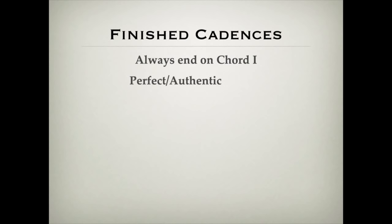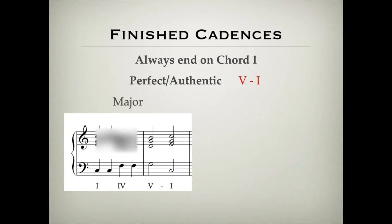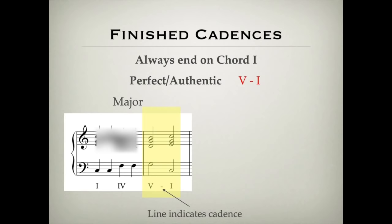And there are two types of finished cadences. The first is the perfect cadence, which is sometimes known as the authentic cadence. This goes from chord V to chord I. Here I've got a short musical phrase — it's only two bars long — and you can see that it ends with chord V followed by chord I. That is the cadence. In notation you get a little line between the two chords indicating the cadence. You can hear clearly how the movement from V to I gives this definite sense that it is finished.